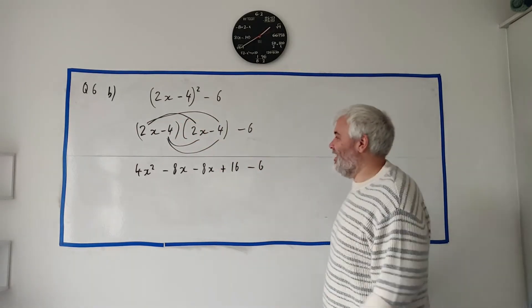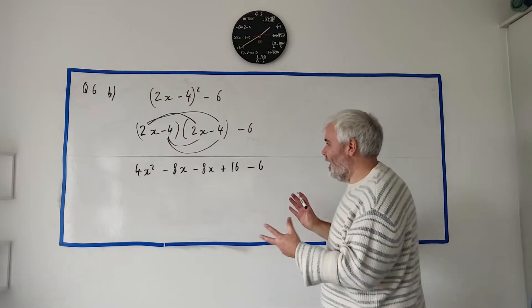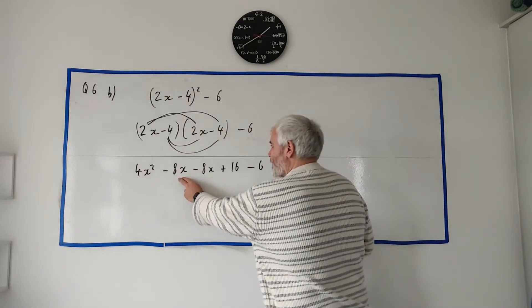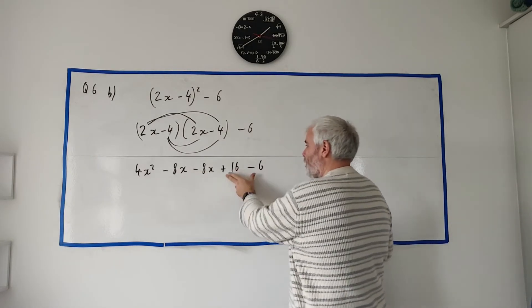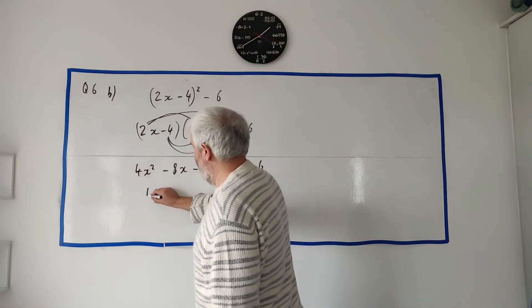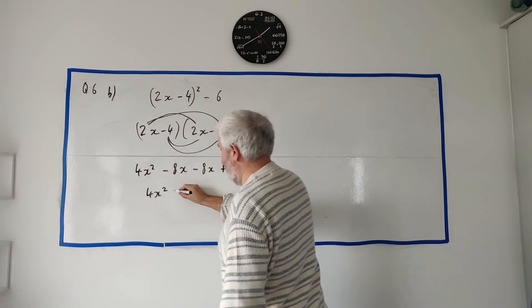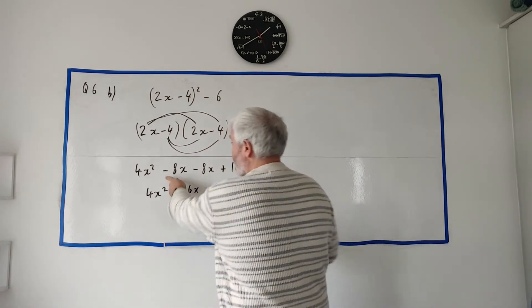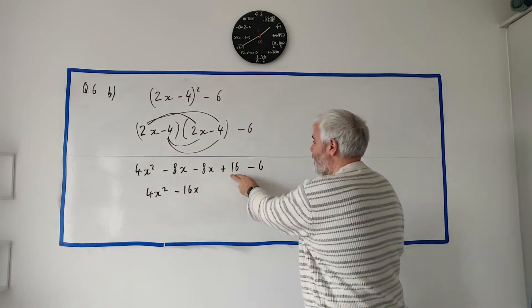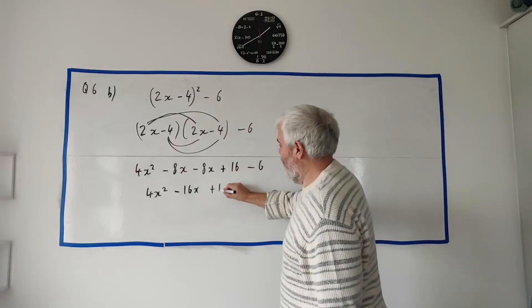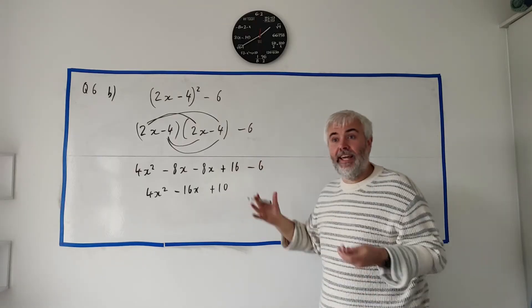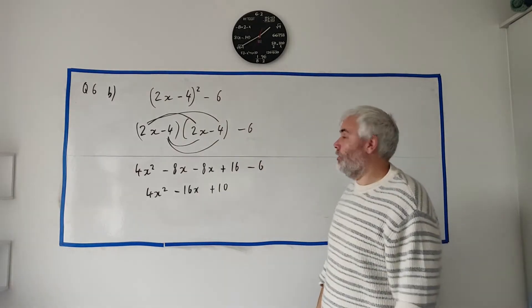Now, some students actually can do this in their head quite good. Go ahead, but I'll stay showing the longer way. Now, let's clean this up a little bit. -8x minus 8x, they go together. Numbers, they go together. So if we clean this up, we get 4x² - 16x. Just putting these two together. 16 take away 6 is plus 10. That's it. That's expanded. That's all they wanted us to do for Part B.